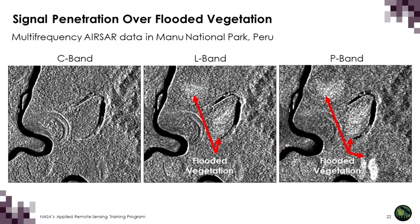Here is an example of signal penetration through vegetation to detect flooding. Flooded vegetation is dominated by double bounce, which appears as very bright areas. This SAR image covers Manu National Park in Peru in 1993, with three different frequencies: C-band at around 5 centimeters, L-band at around 24 centimeters, and P-band at around 60 centimeters. You can see more flooded vegetation — more bright areas — as the wavelength increases, with more detected at P-band than at L-band or C-band.